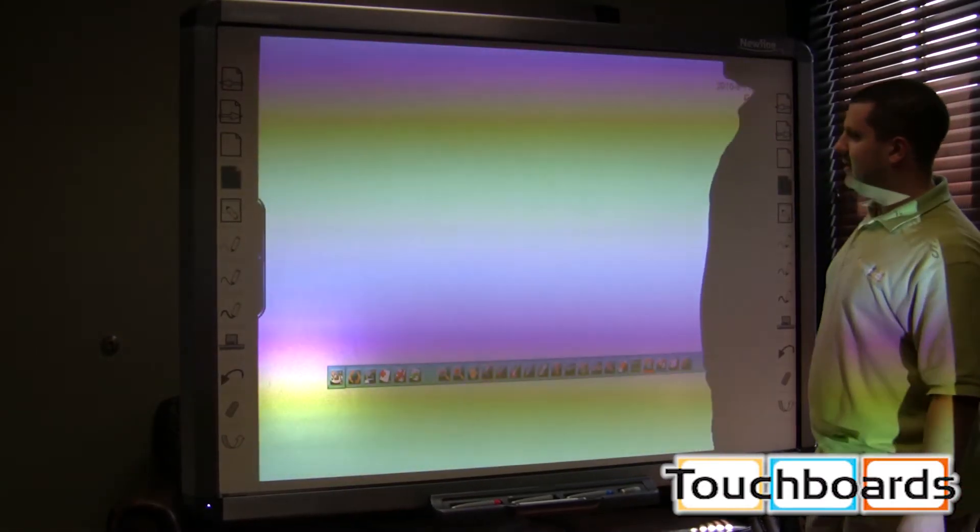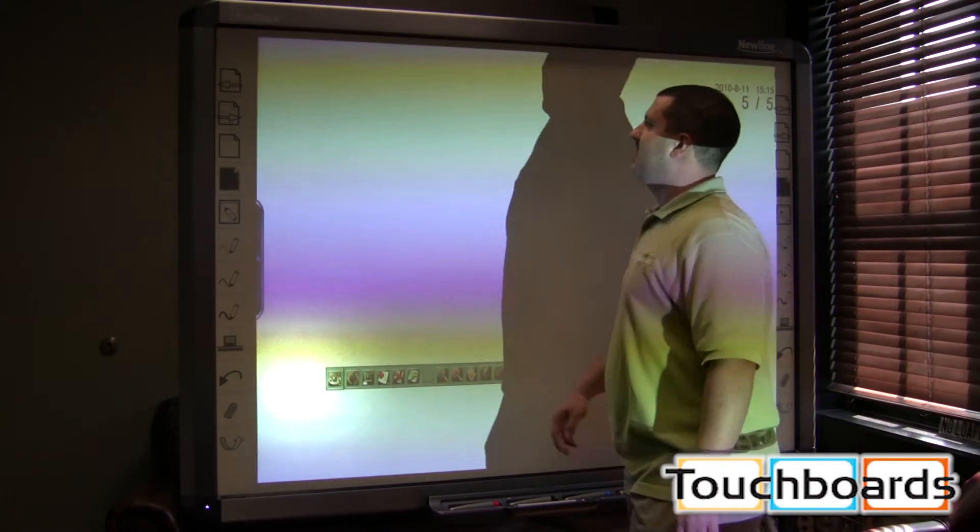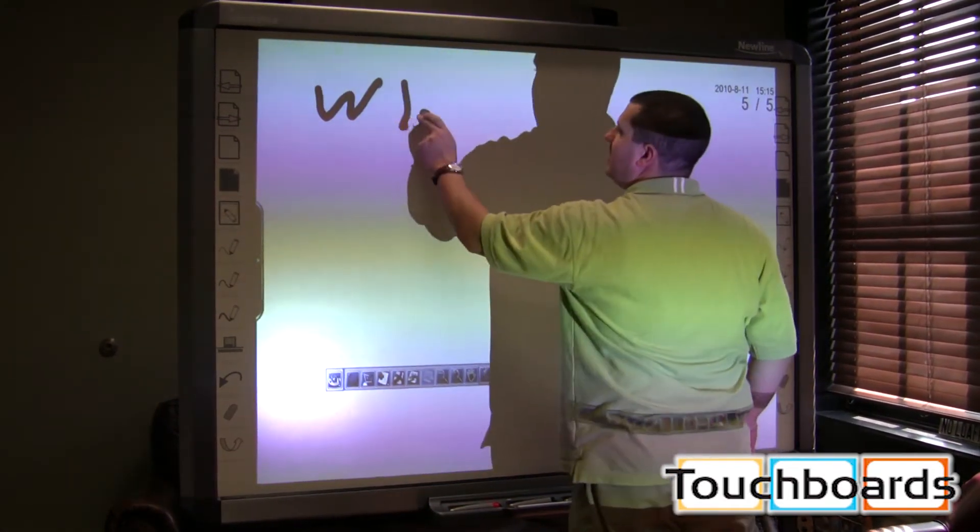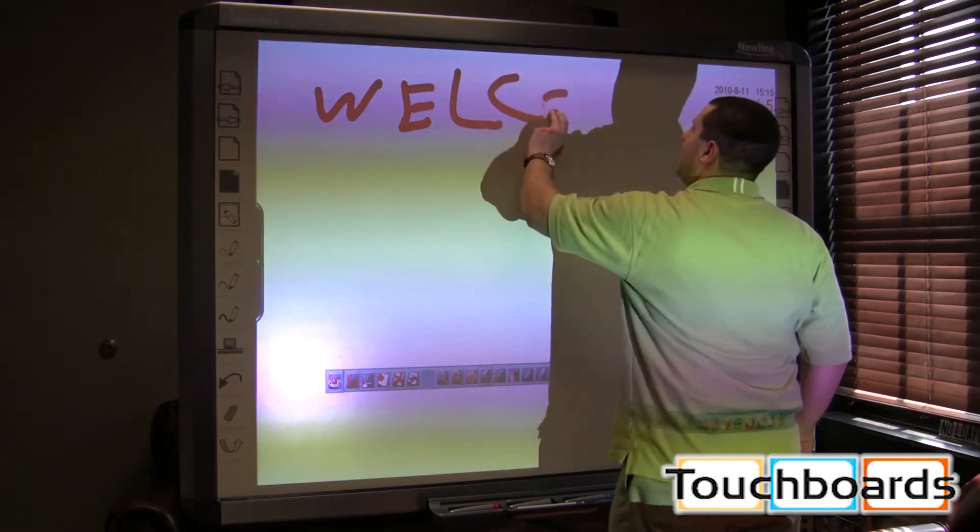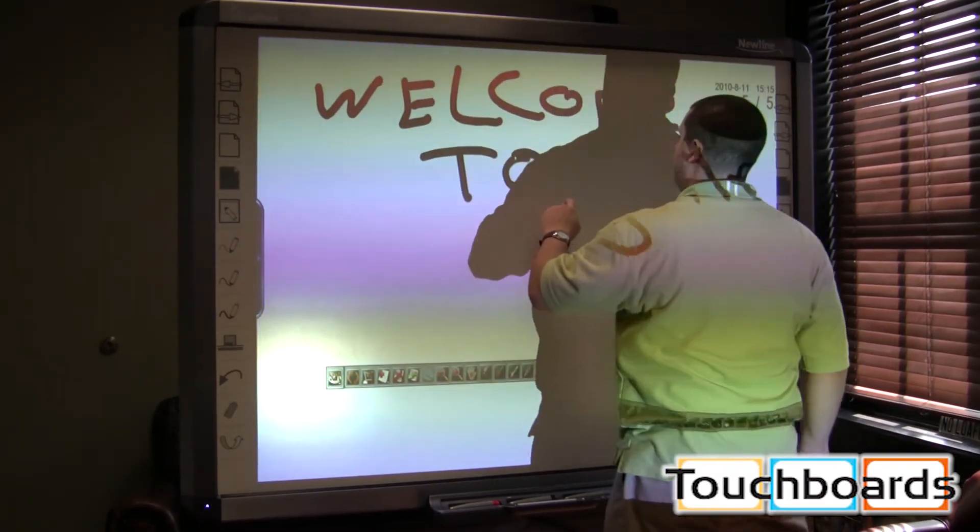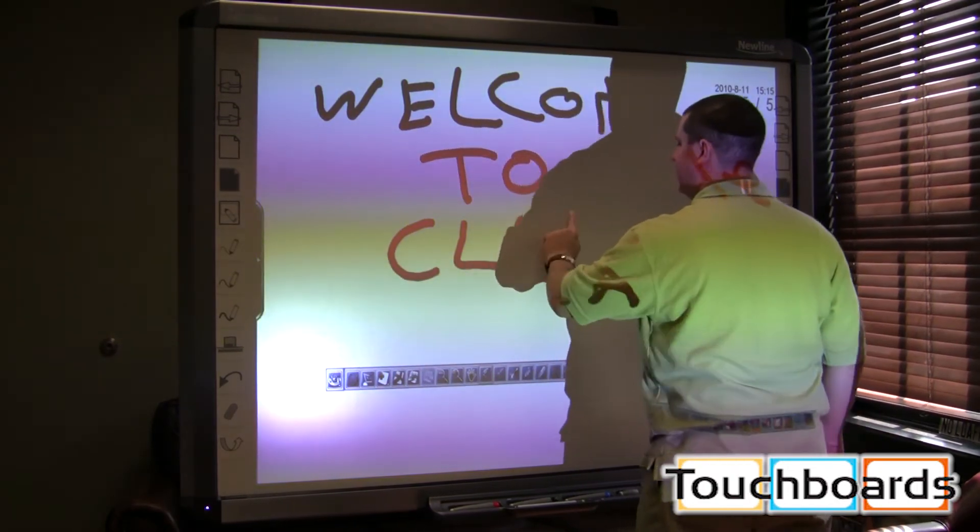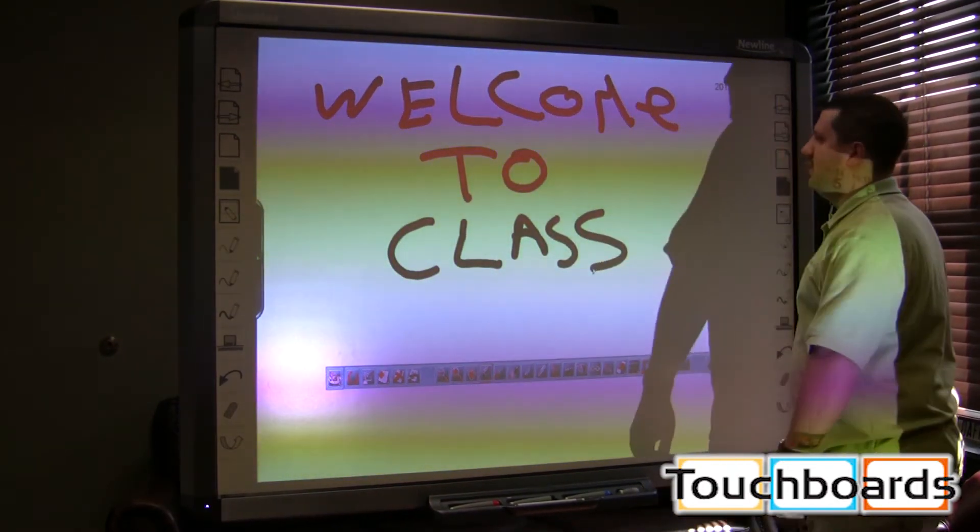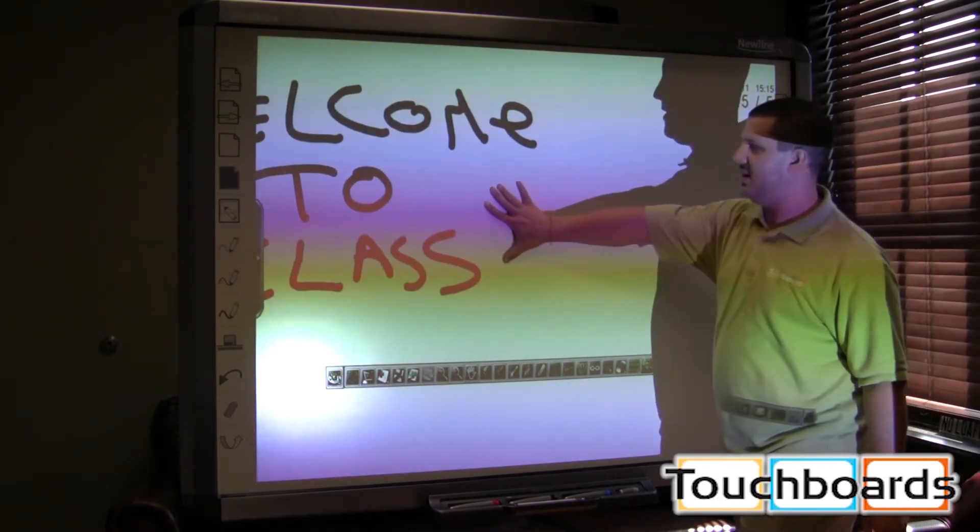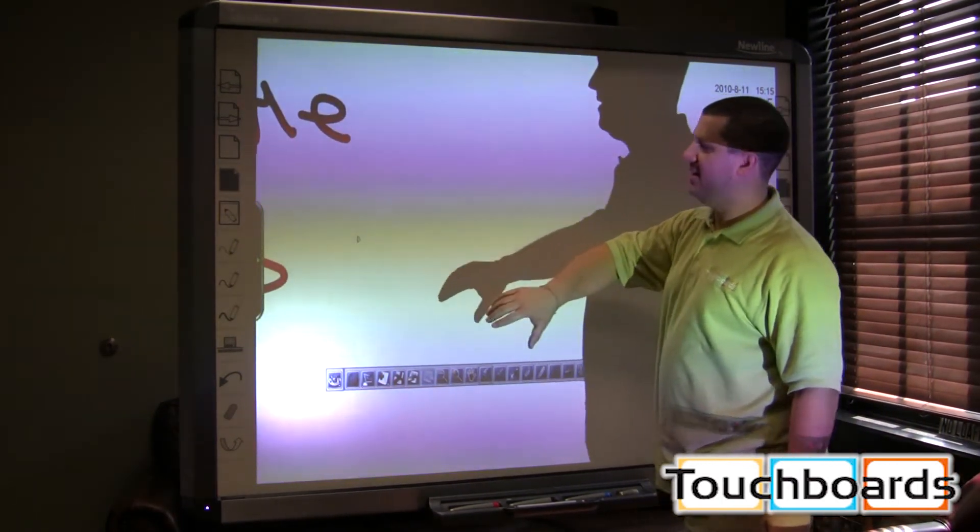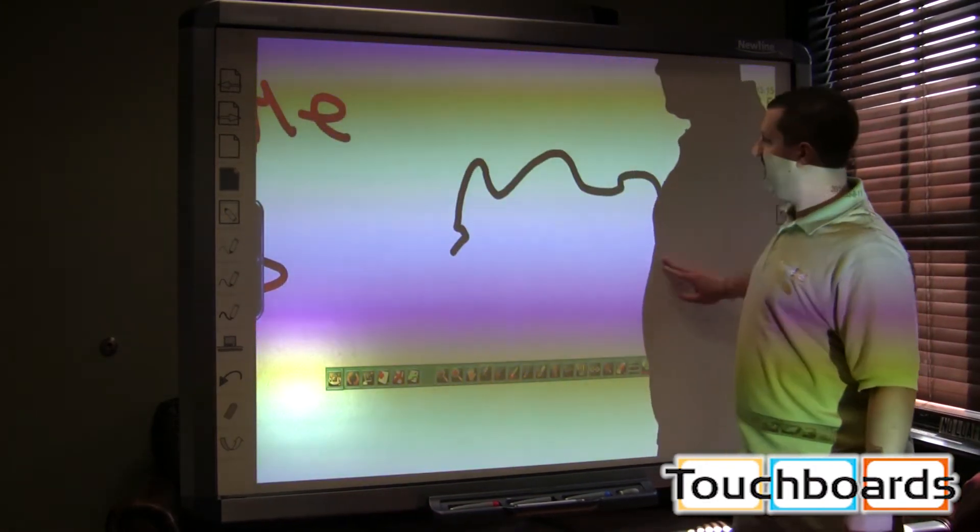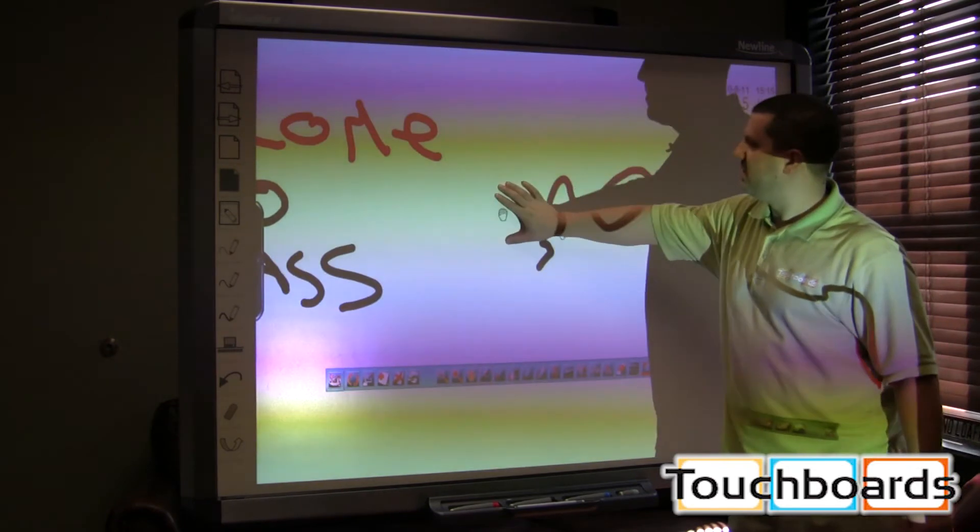Pull up a blank white screen. Now you can take notes on it. We're still on our red pen, but let's just say welcome to class. If you touch your full hand to the board, you can slide all that out of the way. You don't have to erase it. You don't have to pull up a new screen. And you can just keep on writing and do whatever you want to do. Move it right back.